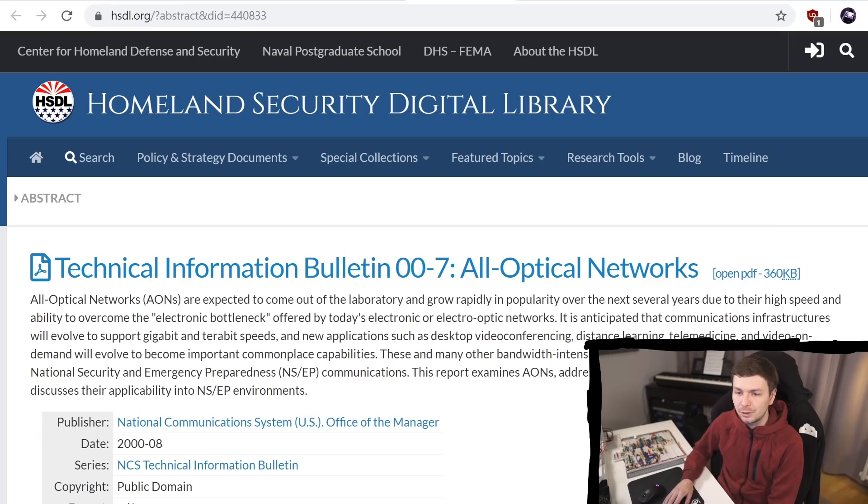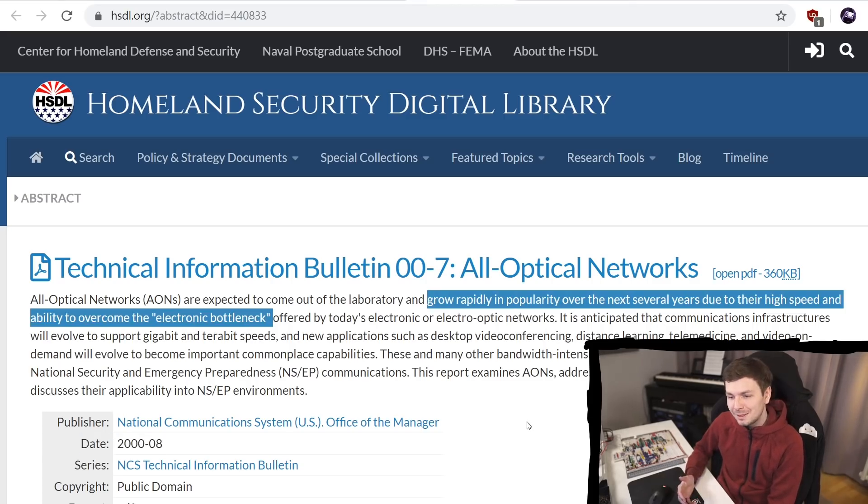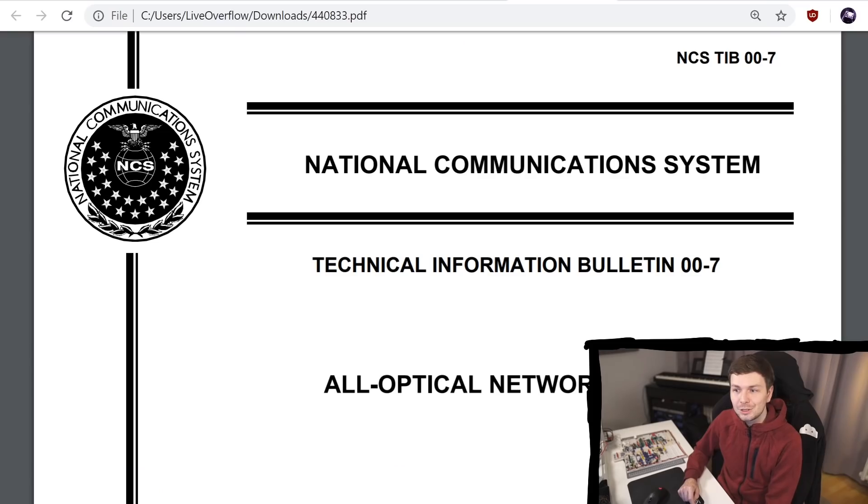Here's a document on the Homeland Security Digital Library called Technical Information Bulletin All Optical Networks. It's actually from 2002 and says that all optical fibers will grow rapidly in popularity due to their high speed and ability to overcome the electronic bottleneck. This document is over 19 years old before fiber got really popular, and nowadays all data centers and long-range connections are basically fiber.